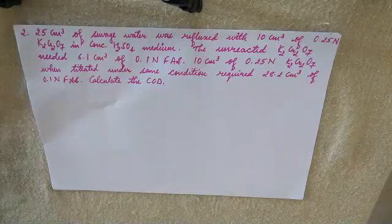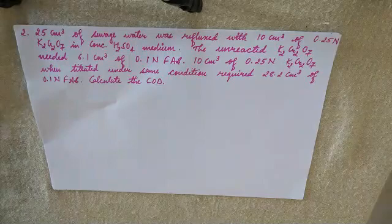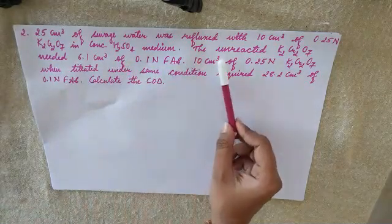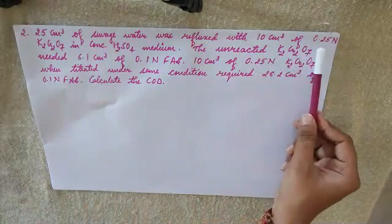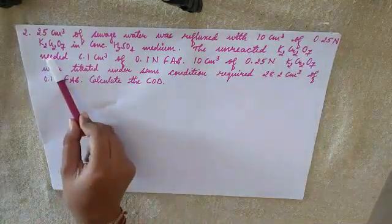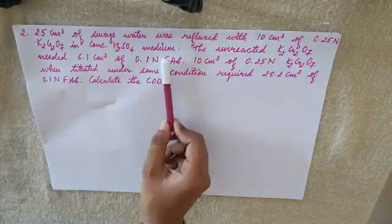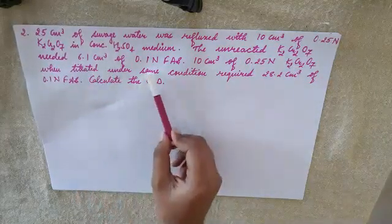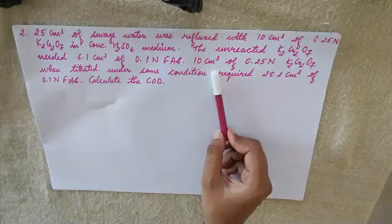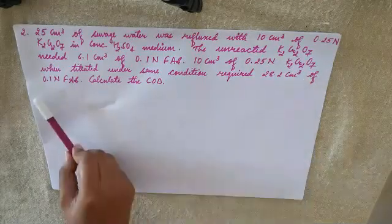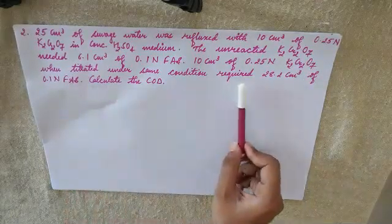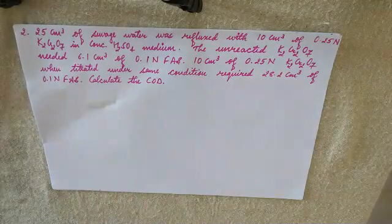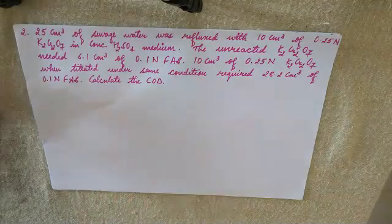Now let us move on to the next problem. Here we have: 25 cm³ of sewage water was refluxed with 10 cm³ of 0.25 normal K₂Cr₂O₇ in concentrated sulfuric acid medium. The unreacted K₂Cr₂O₇ needed 6.1 cm³ of 0.1 normal FAS. 10 cm³ of 0.25 normal K₂Cr₂O₇ when titrated under the same conditions required 28.2 cm³ of 0.1 normal FAS solution. Calculate the COD.